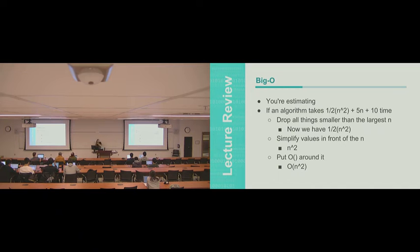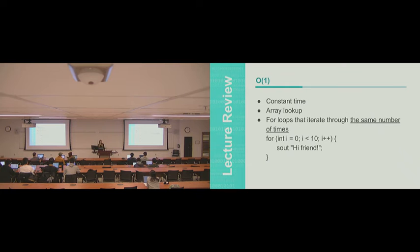But, for now, just more about big O. So, you're estimating here. Let's see if we had an algorithm that takes one half of N squared plus 5N plus 10 times. We drop everything smaller than the largest N. So, largest meaning what we do to N. N squared would be the largest in this case. So, we drop everything else. We don't care about the 5N. We don't care about the 10. So, now we have one half N squared. We simplify values in front of the N. So, we just go ahead and drop those as well. And then we can go ahead and put O with parentheses around it. So, if an algorithm takes this long to execute, then it's big O of N squared.